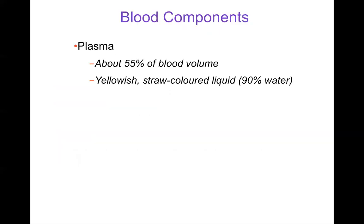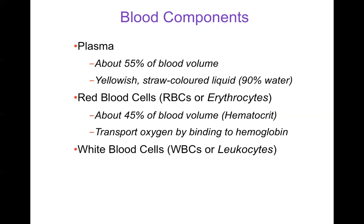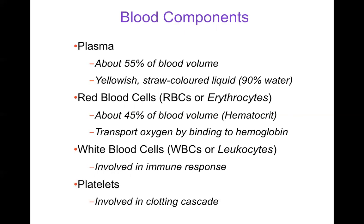Looking at blood components: plasma is the greatest component of blood by volume, about 55%. It's a yellowish straw-colored liquid and it's 90% water. Red blood cells are about 45% of blood volume — also called erythrocytes, or RBCs — and hematocrit is the volume fraction of blood that is red cells, so about 45% normally. Red cells carry oxygen by binding to hemoglobin. In terms of flow, plasma and red cells are the most important components. Blood also contains white blood cells, or leukocytes, which are involved in the immune response, and platelets, which are involved in clotting.